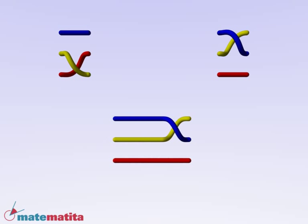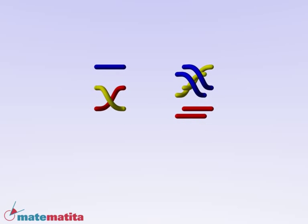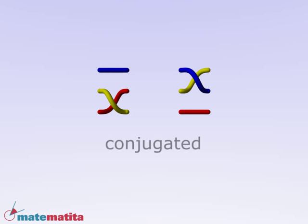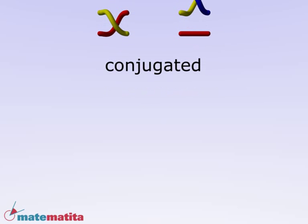In general, understanding whether two given braids are conjugated is an intriguing issue. Let's go back to our problem. When do two braids close to the same knot?